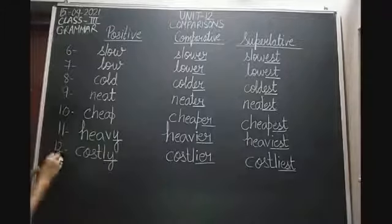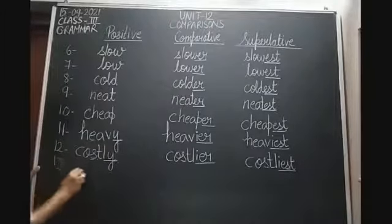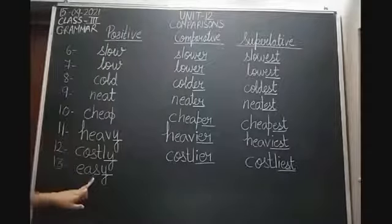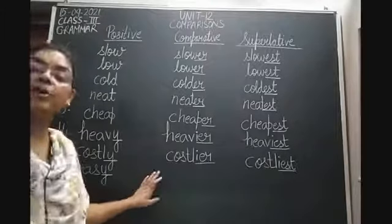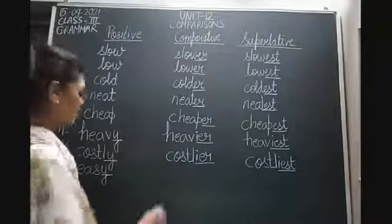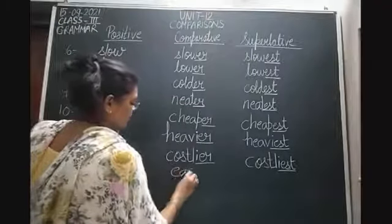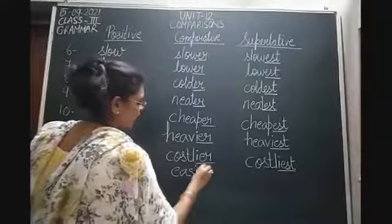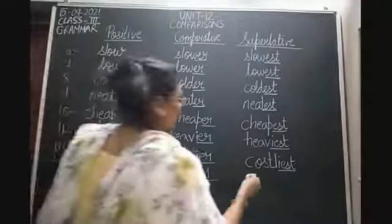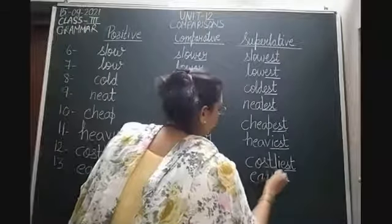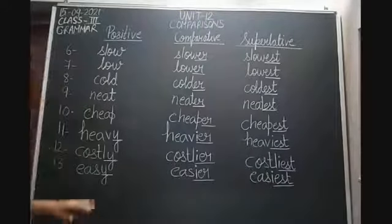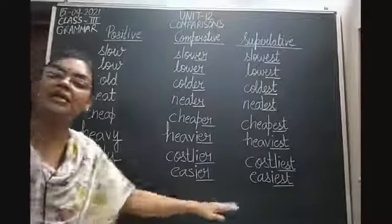The thirteenth adjective is easy. Easy also ends in Y, so we remove Y and replace with IER to form the comparative degree — easier. Then we remove Y and replace with IEST for the superlative degree — easiest. So: easy, easier, easiest.